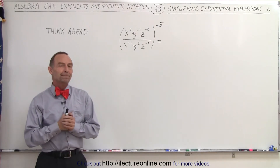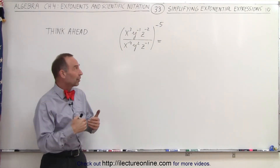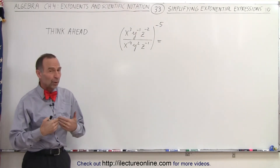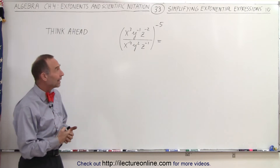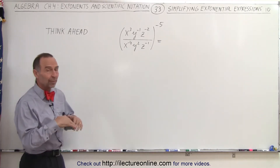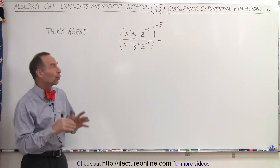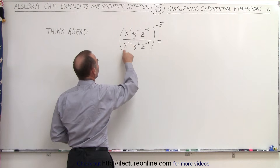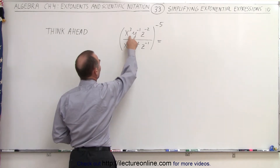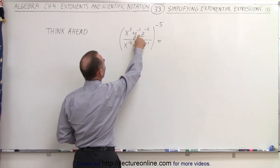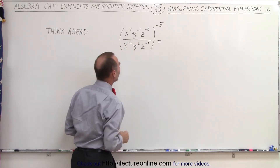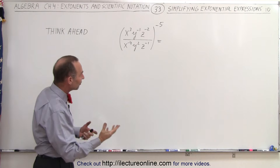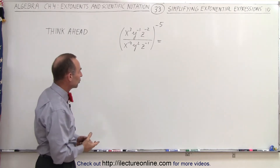Welcome to our lecture online. Here we have another one of those examples where thinking ahead lets us simplify things very quickly. Notice we have an x on the numerator and denominator, as well as a y and a z, and we have positive and negative exponents.